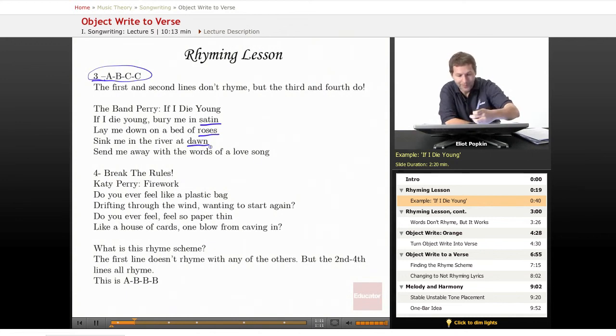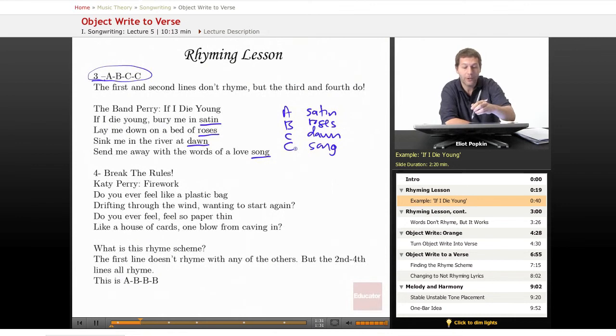So if we think of the rhyme scheme, we have the word satin, and then we have roses, dawn, and song. So this is an example where the first two lines don't rhyme at all, and then the third and the fourth lines rhyme. So this is ABCC.